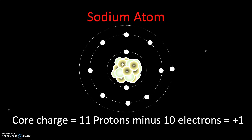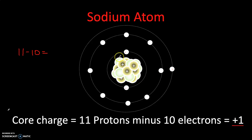Let's revisit sodium one more time. Sodium has 11 protons and two plus eight electrons in its inner shells — a total of 10 inner electrons providing a shielding effect. That means the singular valence electron experiences a core charge of just plus one, which is quite weak. The nucleus is not holding on to this outer electron very strongly at all, so sodium can get rid of it quite easily, leaving it with eight electrons in its valence shell, which makes it much more stable.